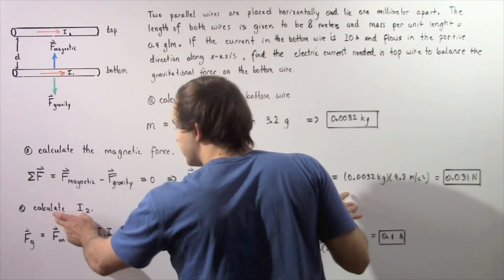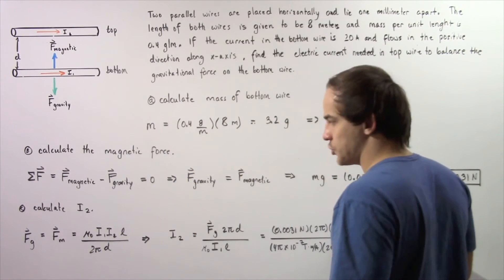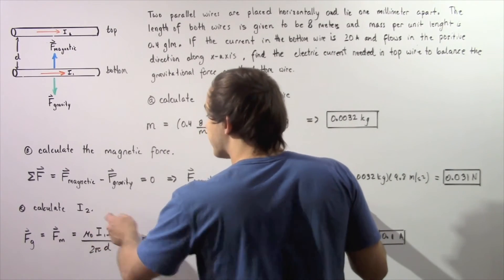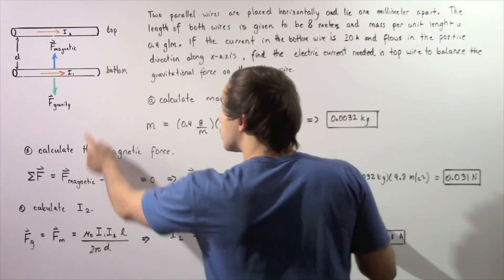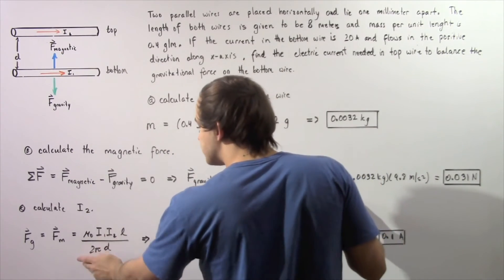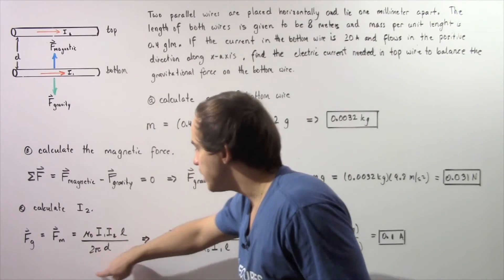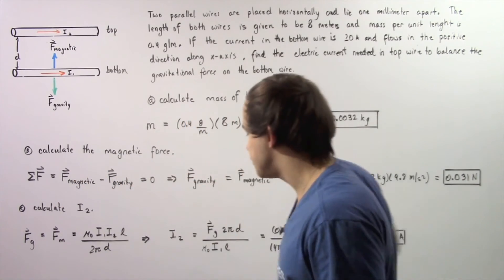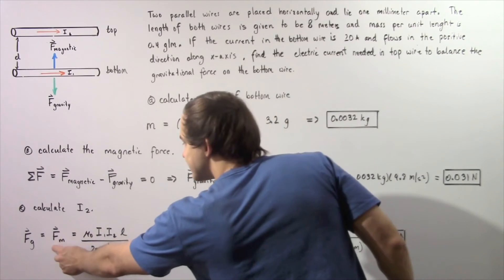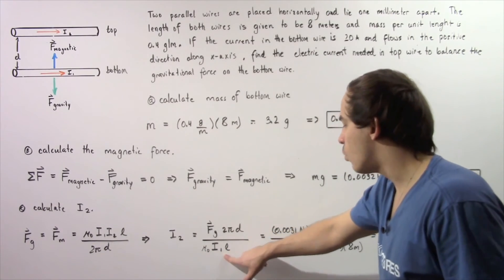That gives us about 0.031 newtons as the gravitational force, which equals the magnitude of our magnetic force. Now in step C we calculate I2. The force of gravity equals the magnetic force, which equals the product of mu0 (the permeability of free space constant) multiplied by I1 multiplied by I2 (what we're solving for) multiplied by L (the length of the wire), divided by 2π D, where D is the distance between the two wires.